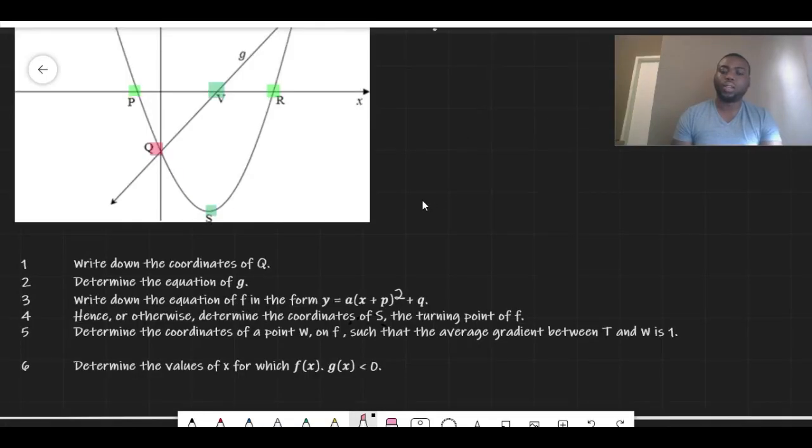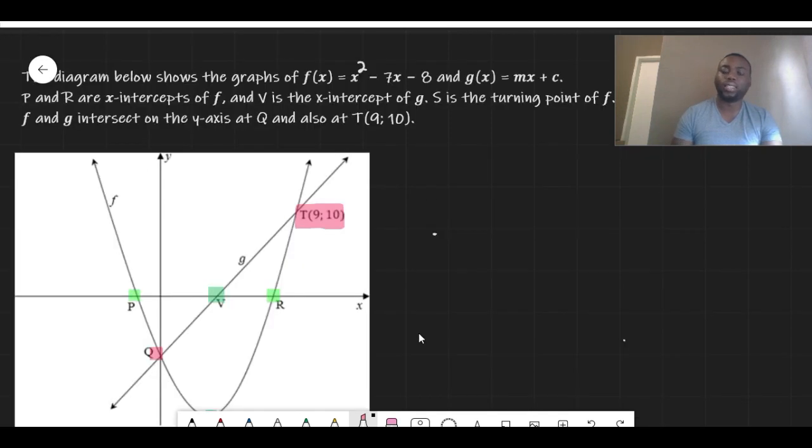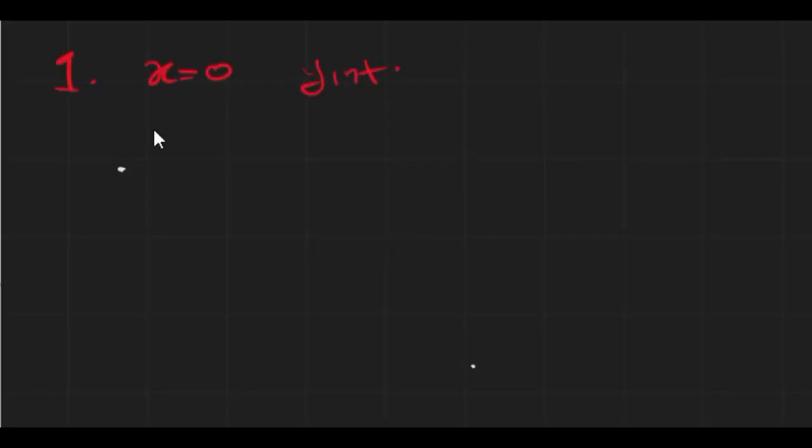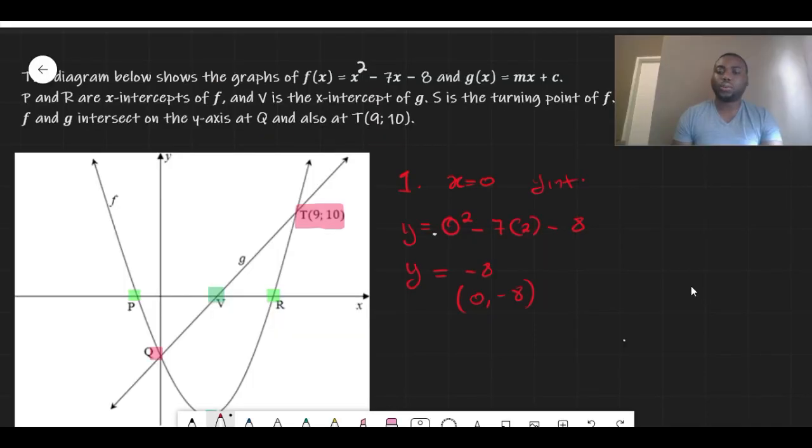T is (9, 10). We have six questions. The first one was to write down the coordinates of Q. Okay, so let's start with that. Q is our y-intercept. We use f(x) to get our y-intercept. So the coordinate for our y-intercept, as you can see, is (0, -8).